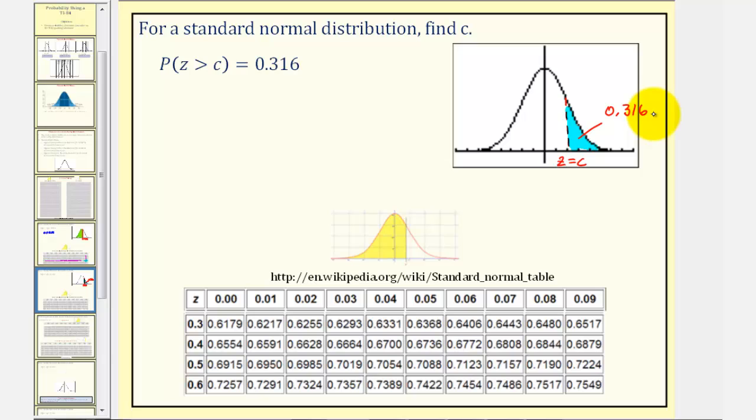But notice how when we use the cumulative Z-score table, we're finding the area to the left of the Z-score, not to the right. So to find C using the cumulative Z-score table, we actually have to find the probability to the left of our Z-score, or the area under the curve to the left, which would be this area here.